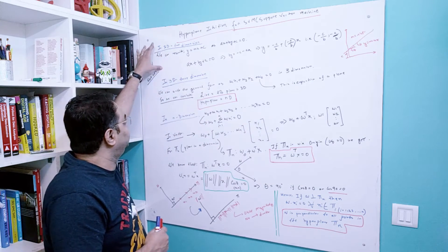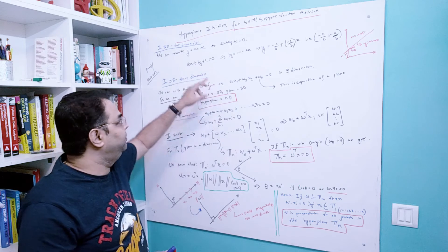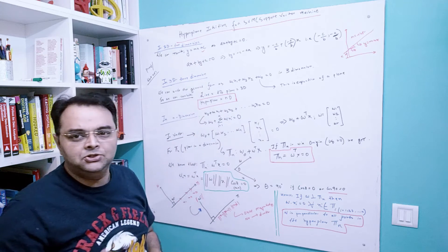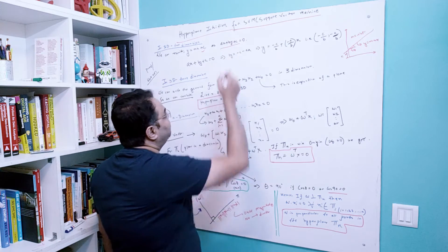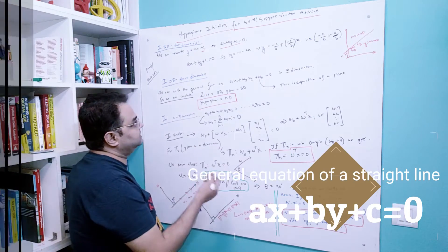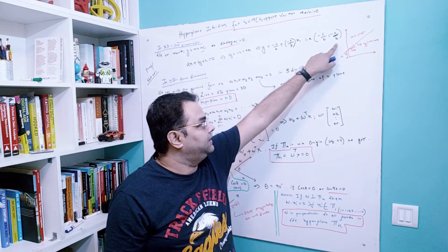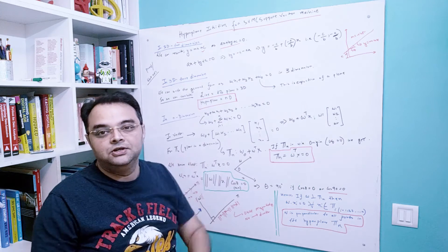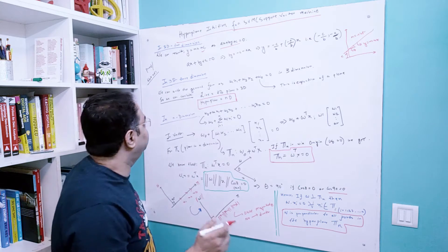Let's get started with what is a hyperplane and its maths. Consider first in two dimensions: in geometry we write the equation of a straight line as y = mx + c. There is another form studied in high school — the generalized form of a straight line — which is ax + by = c = 0. We can prove that if we have a point which is (-c/b) and (-a/b) respectively, this is the same as y = mx + c. The two forms are the same.